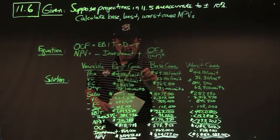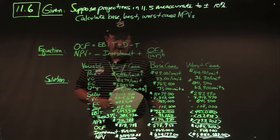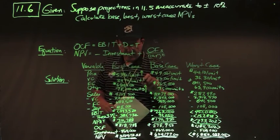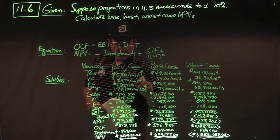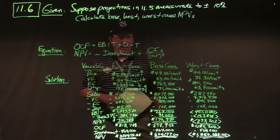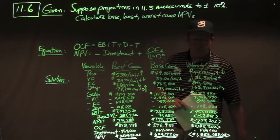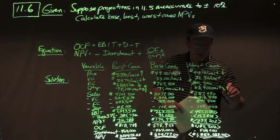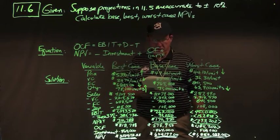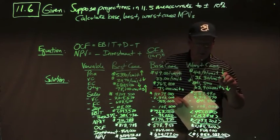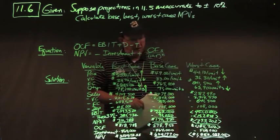Best case: price up 10% to $53.90, quantity up 10% to 78,100 units, variable cost down to $29.70 per unit (times 0.9), fixed costs down to $688,500. Worst case: price down 10% to $44.10, quantity down to 63,900 units, variable cost up to $36.30 per unit ($33 times 1.1), fixed costs up to $841,500 ($765,000 times 1.1).